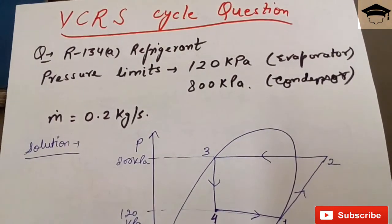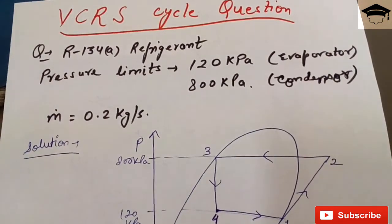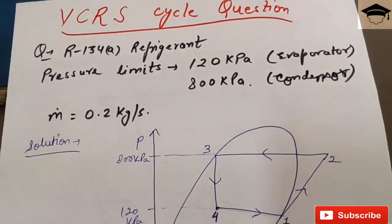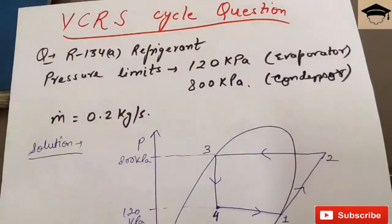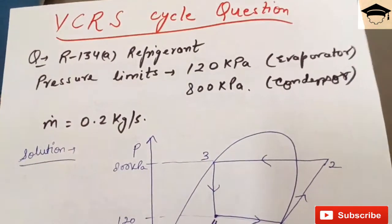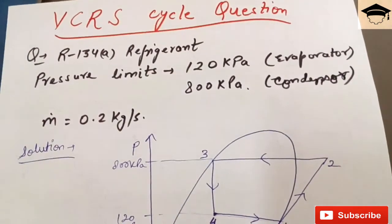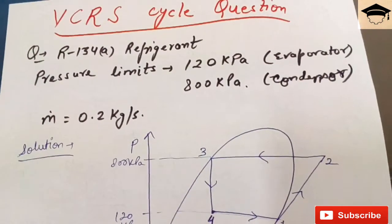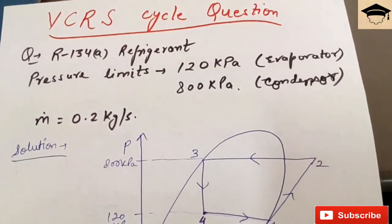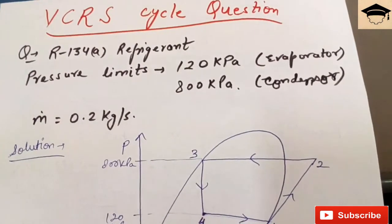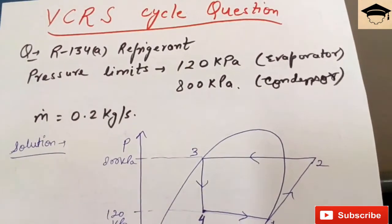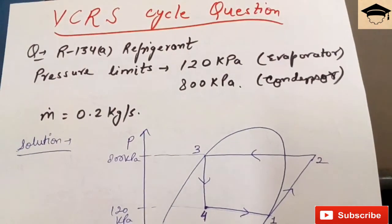Now starting with the video. Generally a question is asked in which a refrigerant is given. Here in this question the refrigerant is R134A, which is also known as ammonia. Now we have the tables and charts, pH charts and tables for all the refrigerants which are compiled under refrigeration tables. You can purchase refrigeration tables or charts, or in many books they are given at the end. You cannot solve these problems without them.